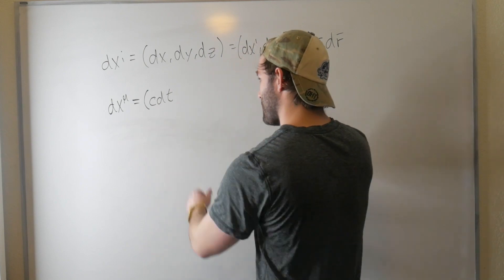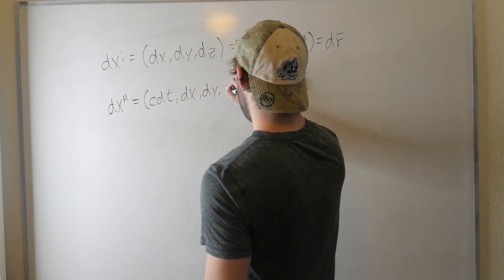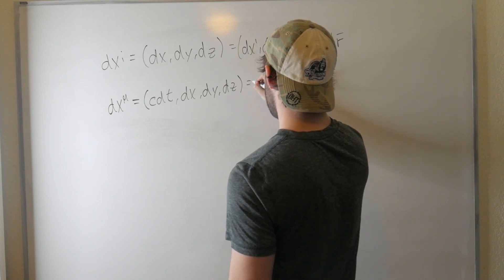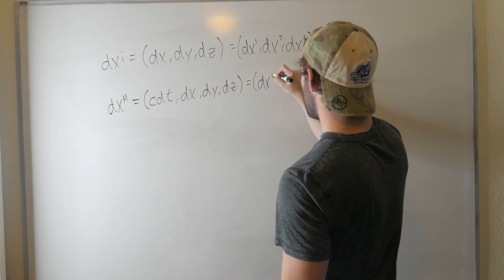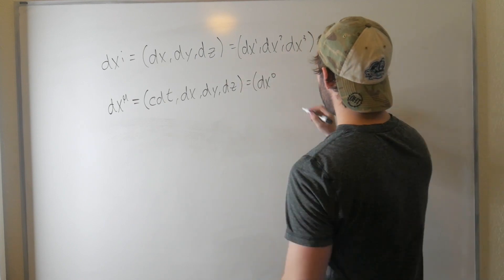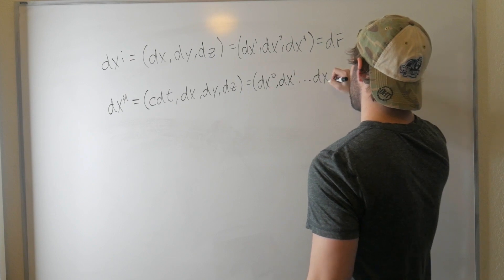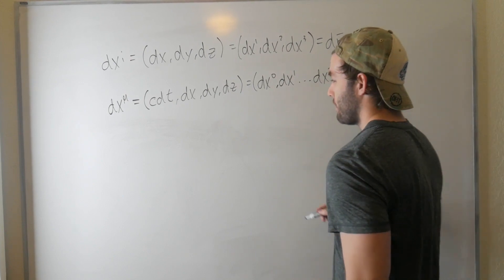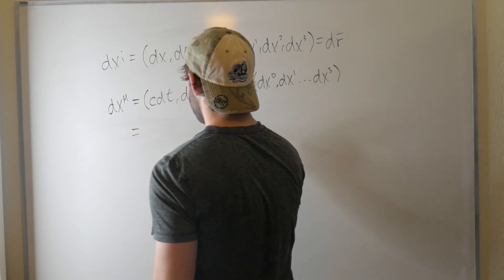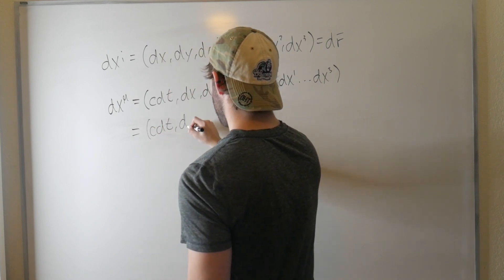So we'll call that dx^μ is equal to c dt, so this still has units of distance, dx, dy, dz, which is equal to dx^0, so now we have our index running from zero to three, instead of from one to three, dx^1, dx^3, and we can rewrite this as c dt, dr.